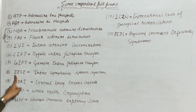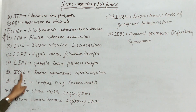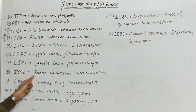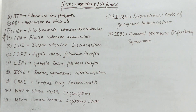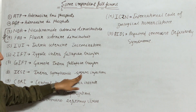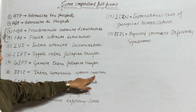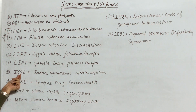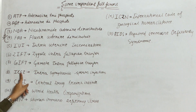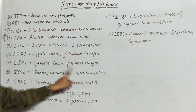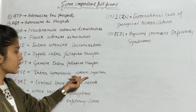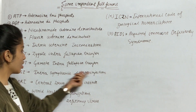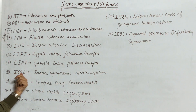Next is ICSI — full form is Intra Cytoplasmic Sperm Injection. I from Intra, C from Cytoplasmic, S from Sperm, and I from Injection. So the full form is Intra Cytoplasmic Sperm Injection, abbreviated as ICSI.